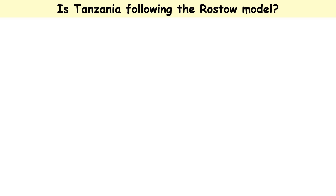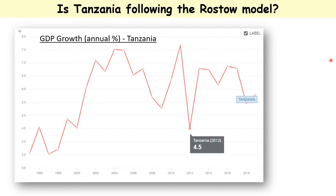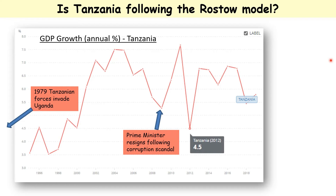Now, how does Tanzania follow the Rostow model? This diagram shows the GDP growth - gross domestic product is the total amount of money that the country is earning. This shows the percentage change in GDP since about 1990 to 1995. We can see that the growth of the country is a more zigzag line - zigzag development instead of just being a straight line of improvement. And as the country develops, you get bad things occurring which will slow down development.